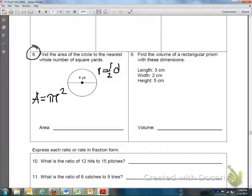And here they're giving us the diameter. The diameter goes all the way across. That means the radius is 8 divided by 2, which is 4.